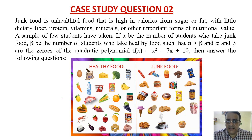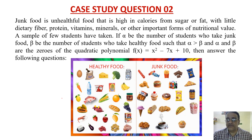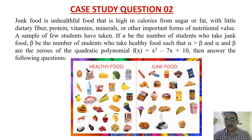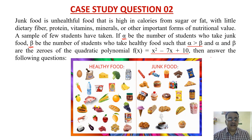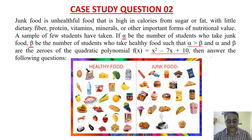Case study question two: Junk food is unhealthy food that is high in calories from sugar or fat with little dietary fiber, protein, vitamins, or minerals. A sample of students was taken. Let alpha be the number of students who take junk food and beta be the number who take healthy food, such that alpha is greater than beta. Alpha and beta are the zeros of a quadratic polynomial.